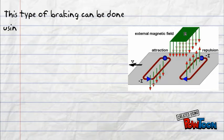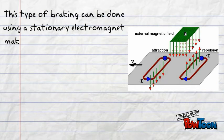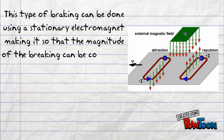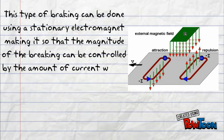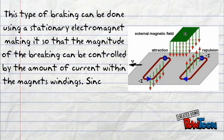This type of braking can be done using a stationary electromagnet, making it so that the magnitude of the braking can be controlled by the amount of current within the magnet's windings.